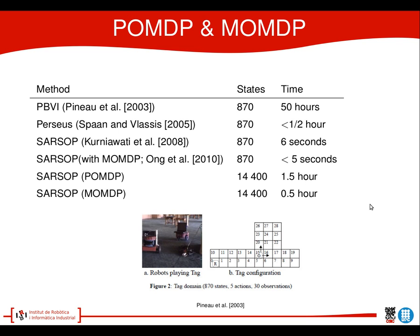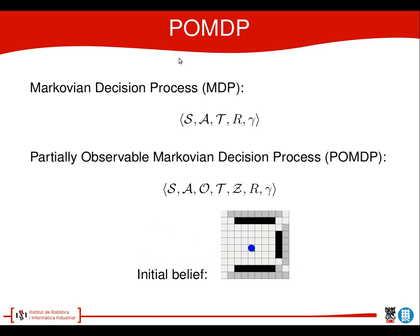We see the difference between POMDPs and MOMDPs in the last two columns with more states. Markovian decision processes contain a set of states. In our case, the state is a combination of the hider and the seeker position. The actions are the 8 directions we can go to, or staying at the same position. Then we have a transition probability function, which gives us the probability of going from one state to another given an action.